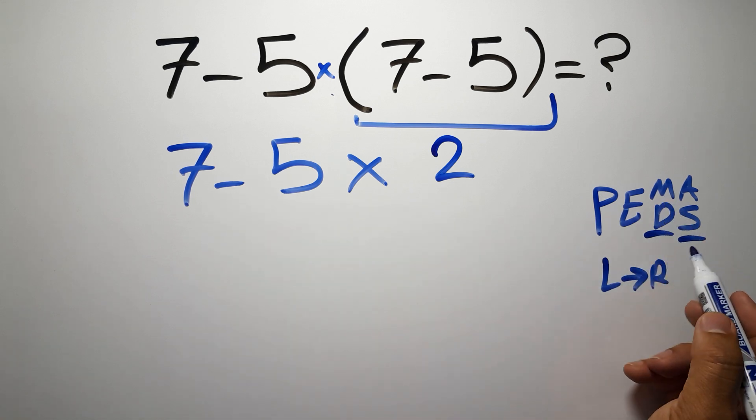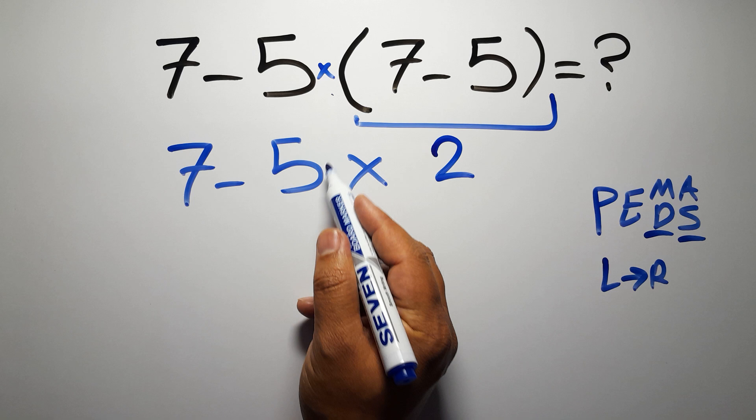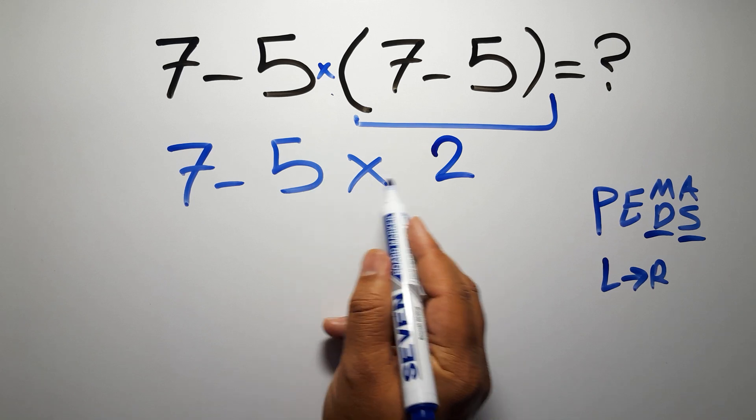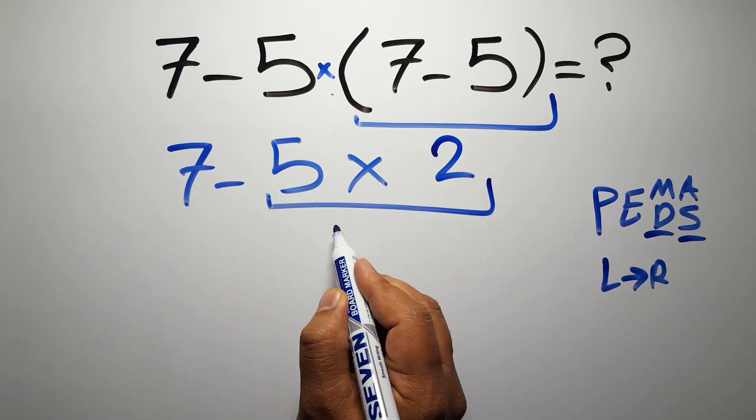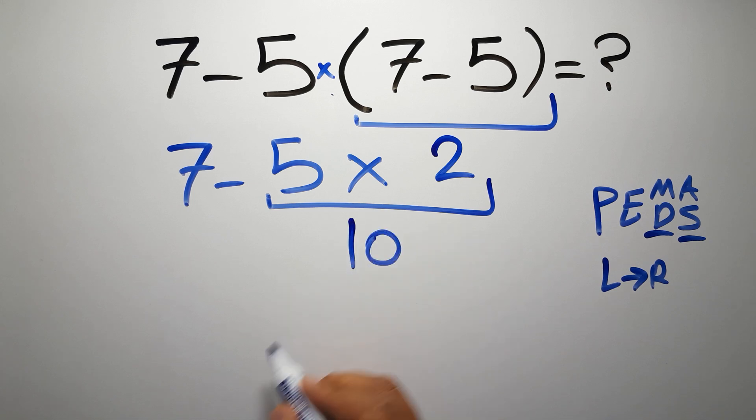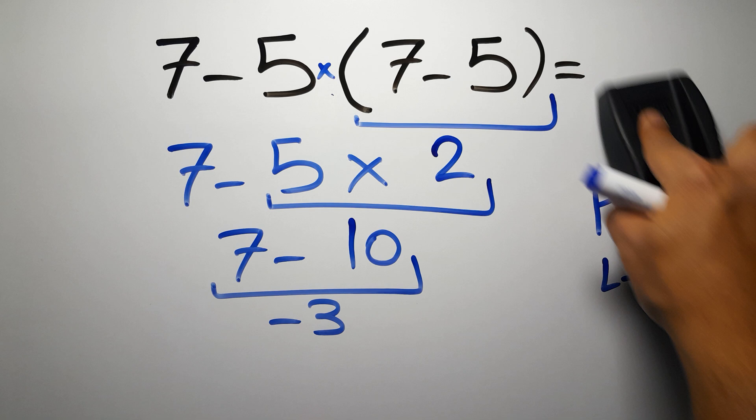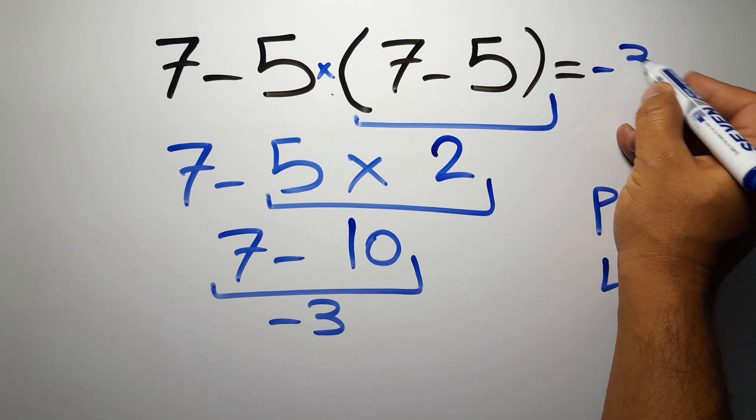Because multiplication comes before subtraction, here first we have to do this multiplication. 5 times 2 is 10, so 7 minus 10 which gives us negative 3. And this is our final answer to this problem. The correct answer is negative 3.